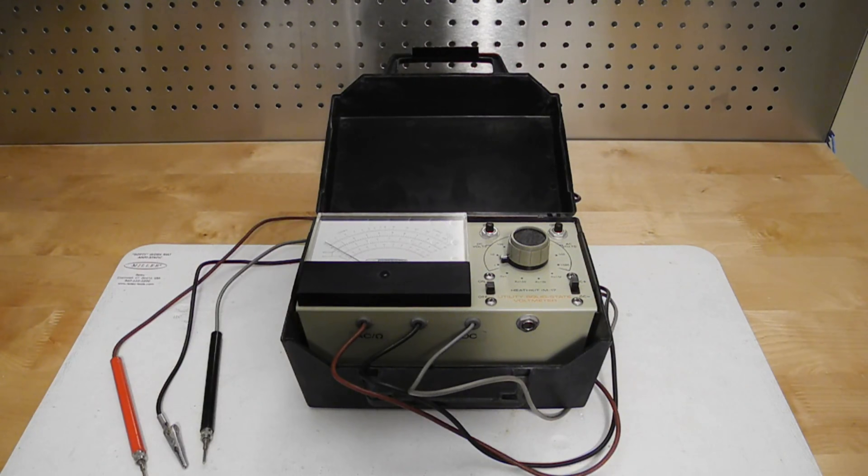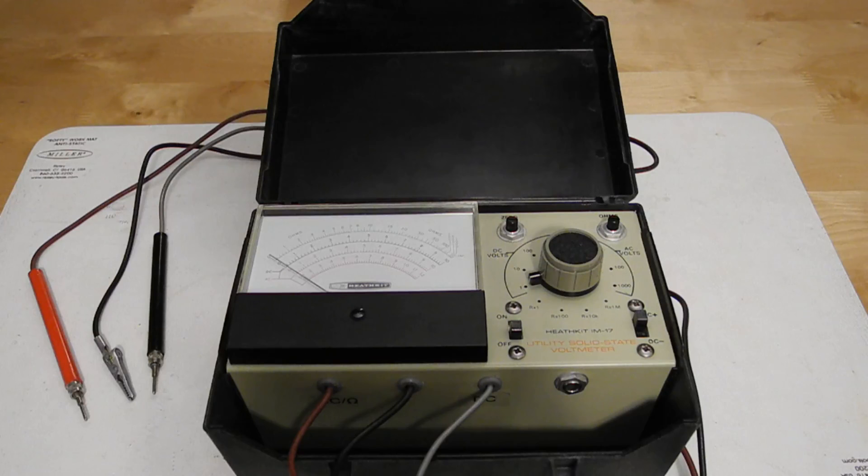In this video we'll take a look at the Heathkit IM17 utility solid-state voltmeter. The IM17 was a multimeter offered by Heathkit from 1967 to 1977 at prices that range from $19.95 to $32.95.